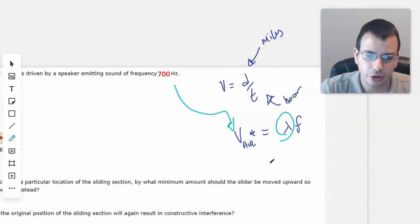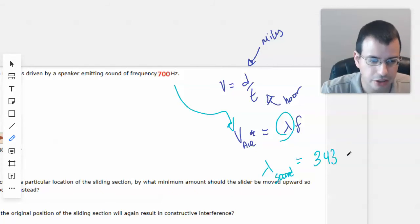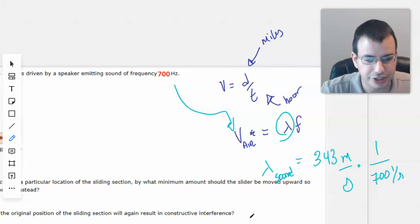And so the wavelength of our sound wave here, this 700 hertz, is going to be, wait a sec, velocity, 343 meters per second times, and we want to get rid of this down here, so we're going to divide by the frequency.